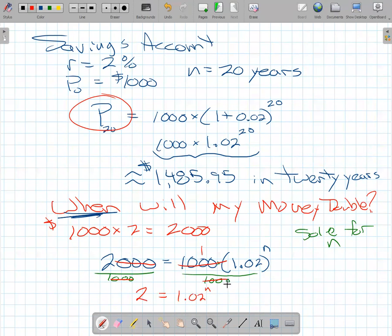Now, if this was 10 to the power N, I could just use the log to solve it. But it's not 10 to the power. It's 1.02 to the power. My calculator doesn't have a log base 1.02 button on it.